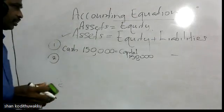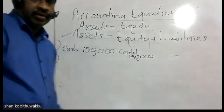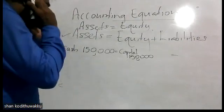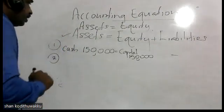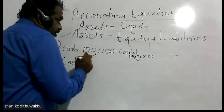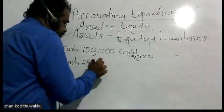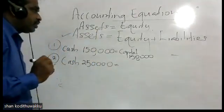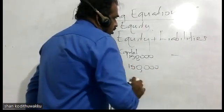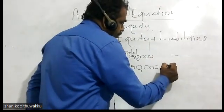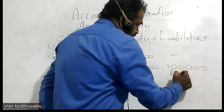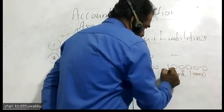Second transaction: he obtained a loan from BOC bank of 100,000 rupees. Then the business cash balance will increase by another 100,000, so total cash will be equal to 250,000. No change in capital, but there will be an increase in liabilities by 100,000 — that is the bank loan.